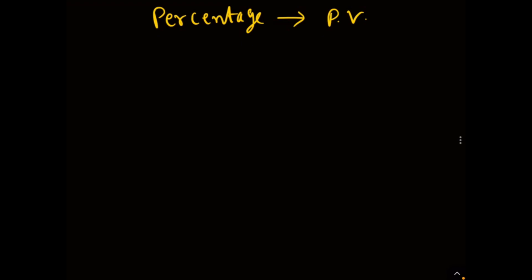Hello everyone, myself Baradwas. In the previous videos, we discussed how to calculate 4-20 mA signal from percentage, and similarly, we can calculate percentage from 4-20 mA signal. We discussed the formulas and methods for these calculations. In this video, we will discuss how to calculate the process variable PV when we have the percentage.